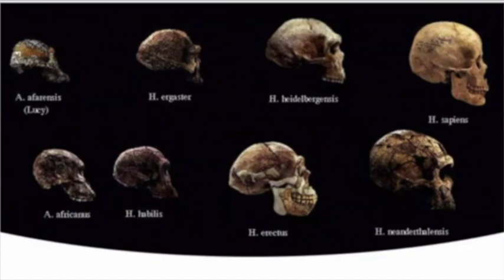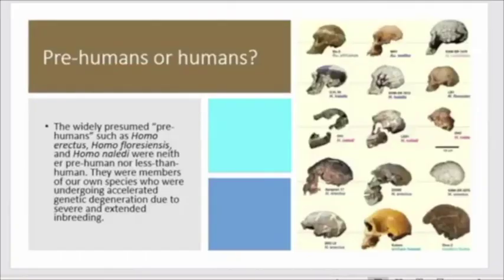This is expected given a biblical-based model of post-Babel conditions and post-Babel dispersion. Genetic degeneration is a very real phenomenon occurring in living populations. If what we observe today in the present is reverse evolution and not forward evolution, the same thing would have happened in the past, and it is very well documented that what we truly observe in the hominin fossil record is genetic degeneration.